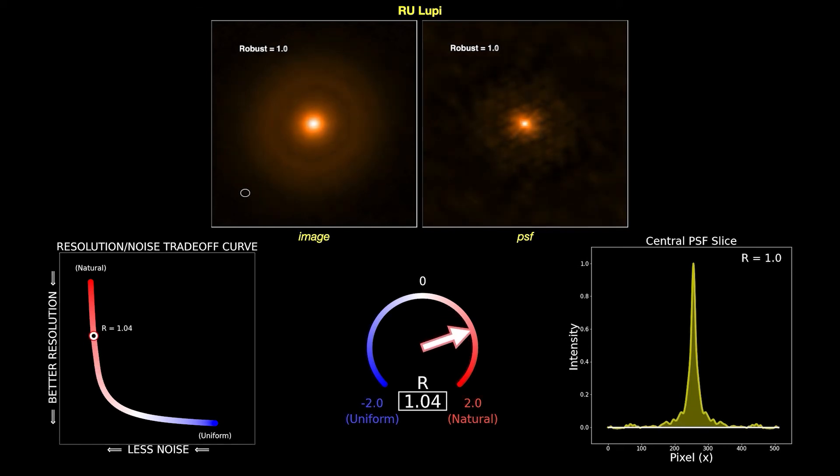Increasing R further, we begin to broaden the beam faster and for much less gain in sensitivity than before. Nevertheless, at R equals two, the image has the lowest possible RMS noise, as we saw with natural weighting.